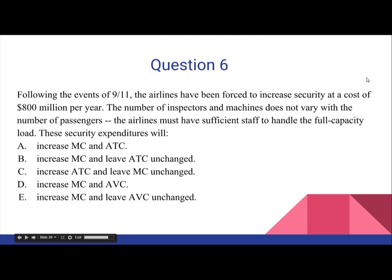Question 6. Following the events of 9-11, the airlines have been forced to increase security at a cost of $800 million per year. The number of inspectors and machines does not vary with the number of passengers. The airlines must have sufficient staff to handle the full capacity load. Note that MC means marginal cost, ATC means average total cost, and AVC is average variable cost — acronyms used to make explanation faster.